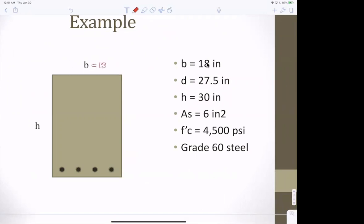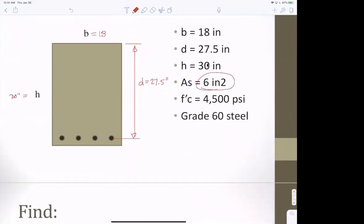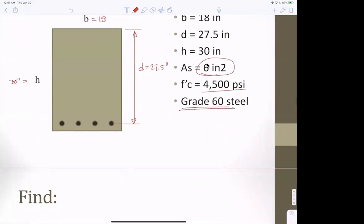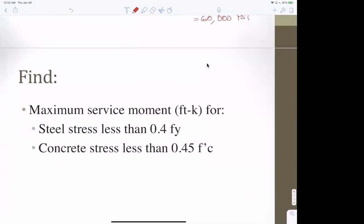So, here's an example. This is 18 inches. This is 30 inches. But the distance from the top to the center of the steel, that's D. And we'll talk more about this in another lecture. But that's 27.5 inches. It's 2 1⁄2 inches short of the 30. There's 6 square inches of steel. Here's the f'c in PSI. And this is grade 60 steel. We'll have that lecture. But that means the yield stress of the steel is 60 KSI, which is 60,000 PSI.